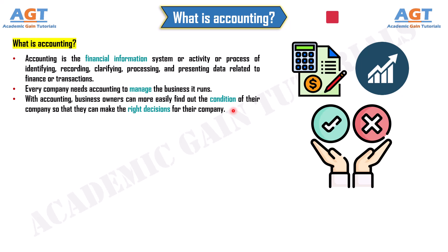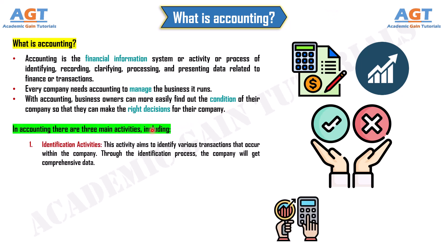In accounting, there are three main activities. Number 1: Identification Activities. This activity aims to identify various transactions that occur within the company. Through the identification process, the company will get comprehensive data.